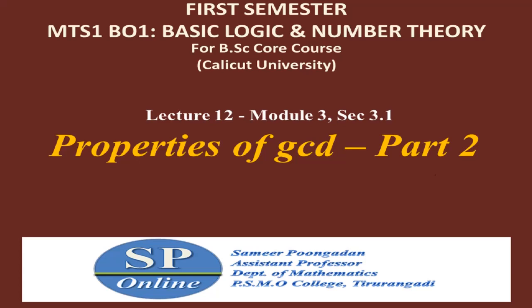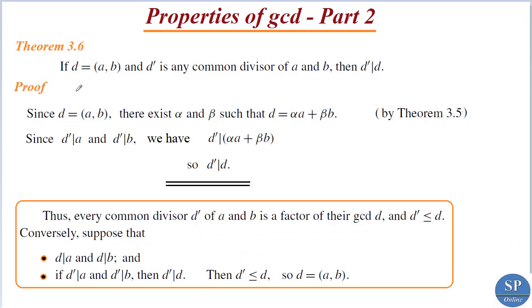This is the second part of the topic: properties of GCD. We can discuss another property. Theorem 3.6: if d equals GCD of a and b, and d-dash is any common divisor of a and b, then d-dash divides d. That is, if d is the GCD of a and b and d-dash is any common divisor of a and b, then d-dash divides d.